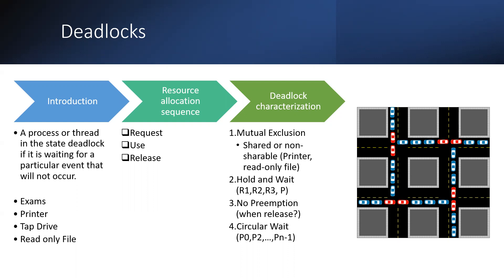For example, there are three persons in some organization and they all want to print their documents. Person one, person two, and person three all send print commands. Person one's print command passes first and that particular person prints at a time. Then person two's command passes and the second person prints — at a time only one person can print.